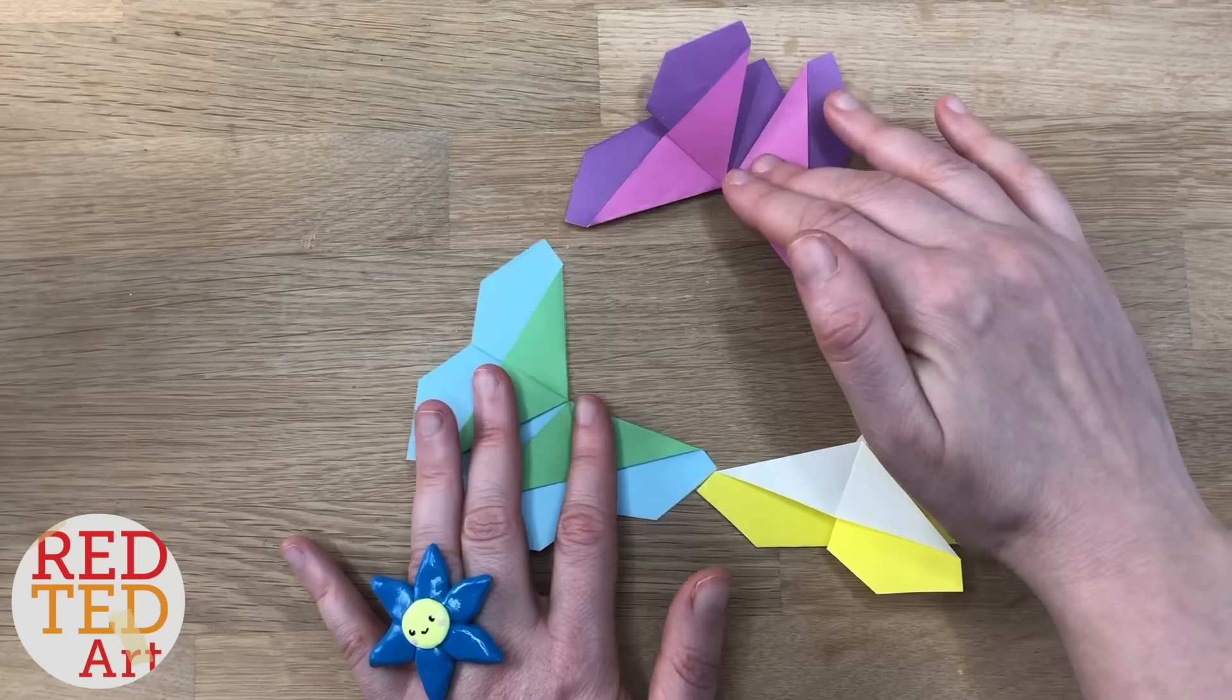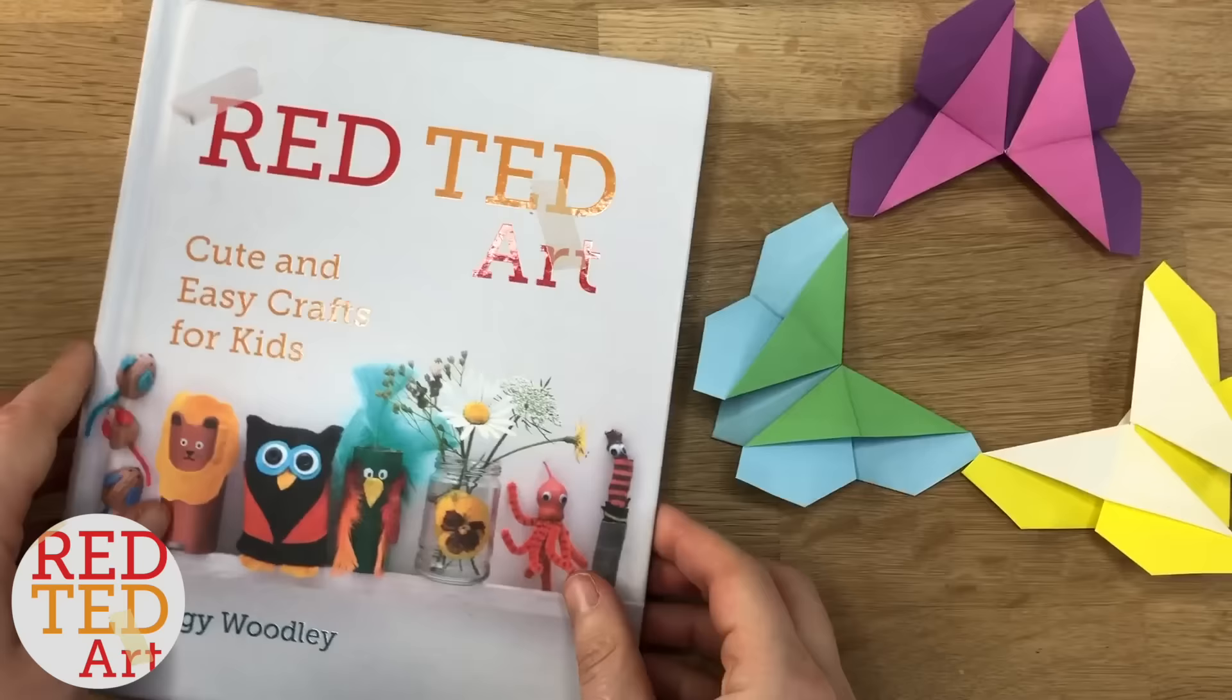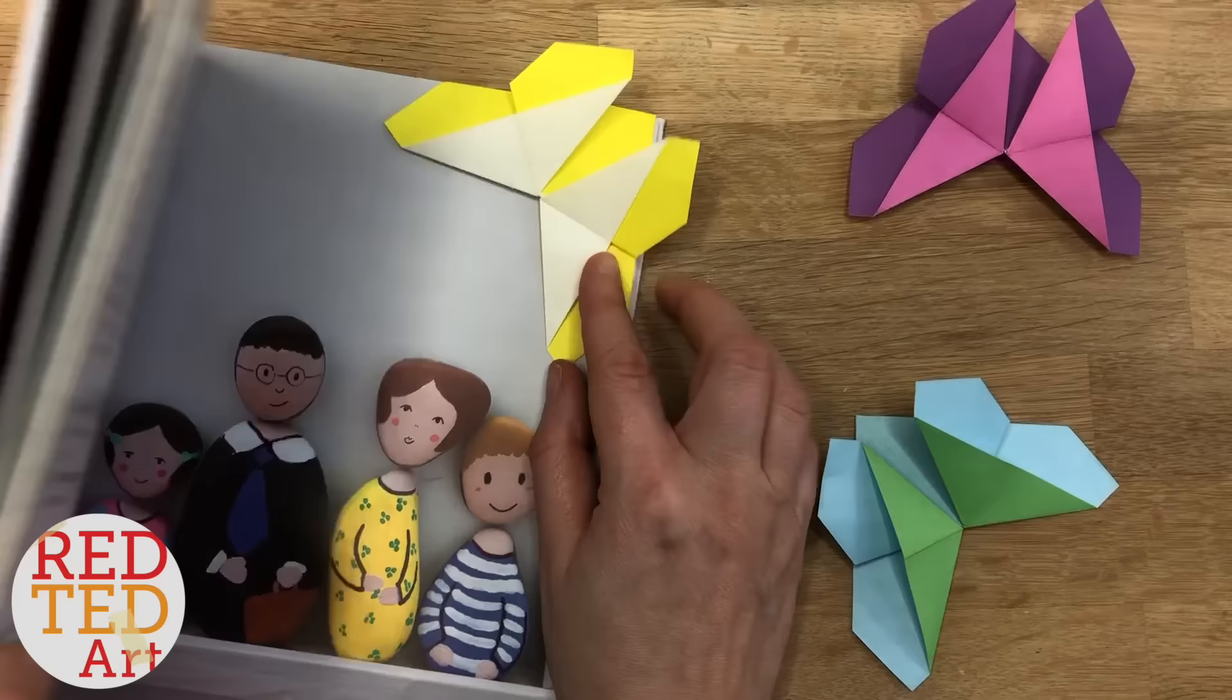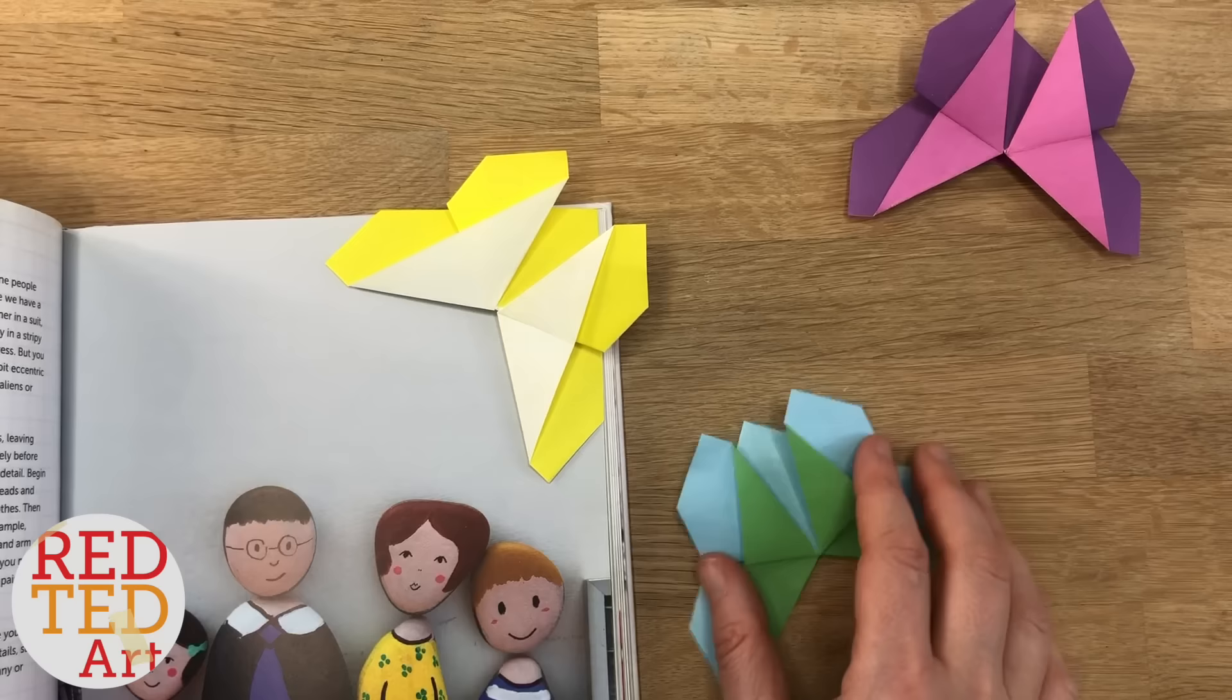Aren't these fabulous? If I take my book and open it, this now neatly pops over the edge. Isn't that adorable? Super easy, super fun, a different type of butterfly bookmark corner. I've got a new paper crafts book coming out in September. Do keep an eye out for it. I think you'll really enjoy it.